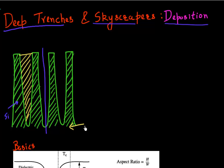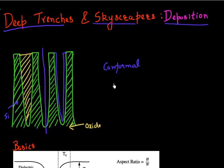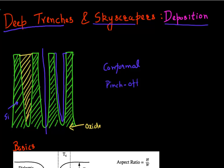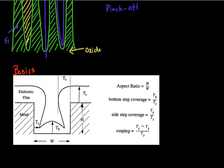Similarly, if I have a high aspect ratio hole in an oxide and I want to deposit a liner before I fill it with copper, what I want to do is deposit a very conformal and thin liner on the surface of the oxide so that I can fill it with copper without worrying about copper diffusing into my oxide. The key term here is conformal deposition with no pinch-off or gaps. So let's look at some basics of deposition and the way we parametrize these things.